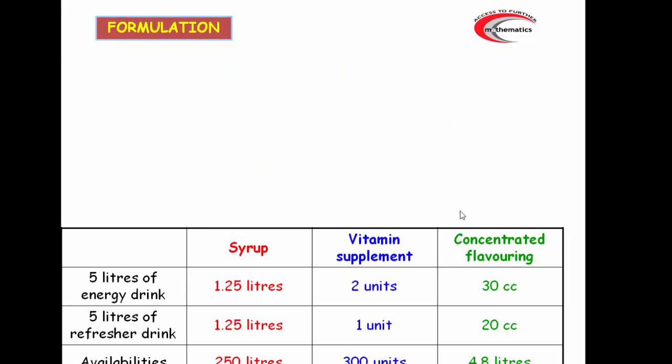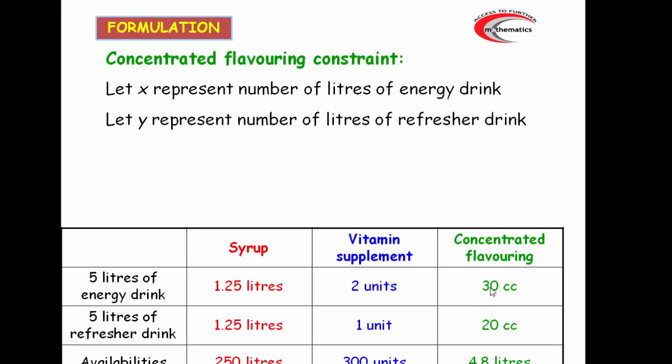Let's move on to the flavouring constraint. Now here, we've got this anomaly with cc and litres, so we need to either convert these to litres or this to cc really. Given that these numbers will be very small as litres, it's probably more sensible to convert this to cc. Again, we need to divide by five, so we get 6x plus 4y, and if we write the 4.8 litres as 4800 cc. Here we have integers, but because we can simplify by making these numbers smaller, we can divide by two and get 3x plus 2y is less than or equal to 2400. It just makes life a little bit easier when we're drawing graphs in a bit.